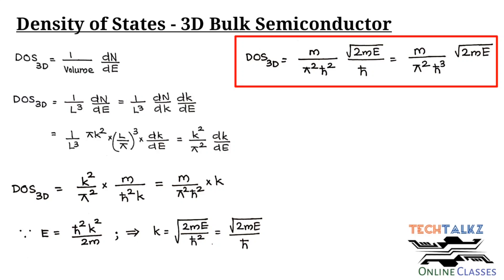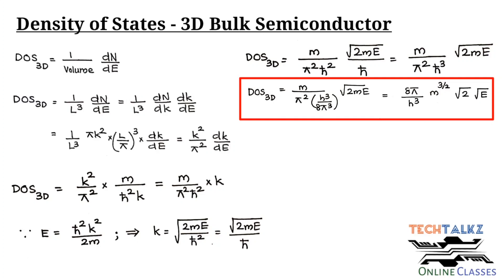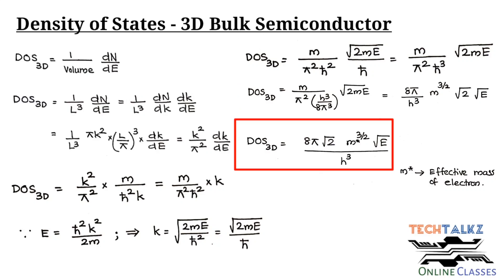Since h-bar = h/2π, we can substitute to simplify. The final equation for the density of states of a 3D structure becomes: DOS₃D = (8π√2 · m*^(3/2) · √E) / h³, where m* is the effective mass of the electron. This is the final equation for the density of states of 3D structures.